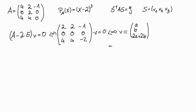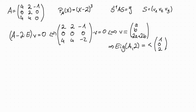The eigenspace of the matrix A for the eigenvalue 2 is the span of (1, 0, 2) and (0, 1, 2).